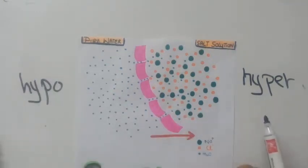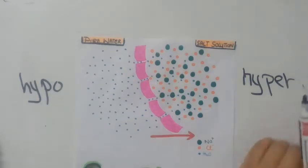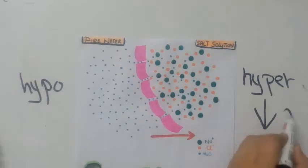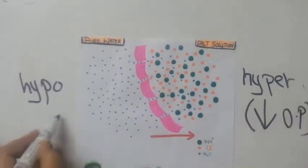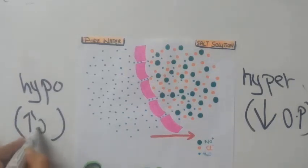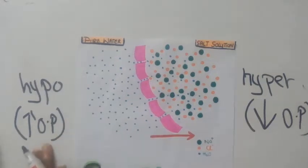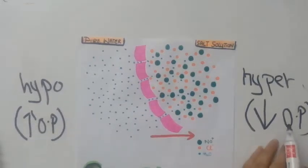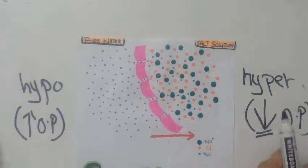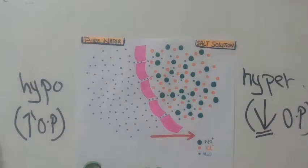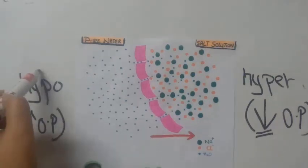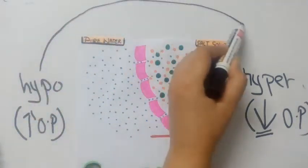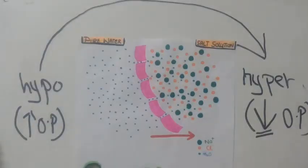The solution on this side of the membrane is hypertonic compared to the other side, and that side is hypotonic. Hypotonic solutions have high osmotic potential because there is more solvent — more water — present, whereas on the hypertonic side there is low osmotic potential because there are more solute particles and less water. As a result, osmosis will occur from the solution with high osmotic potential towards the solution with low osmotic potential.